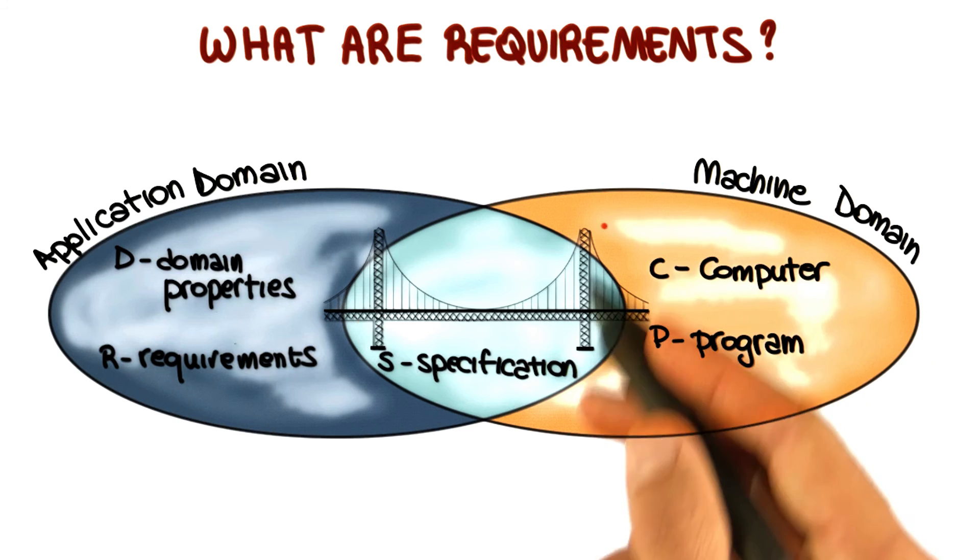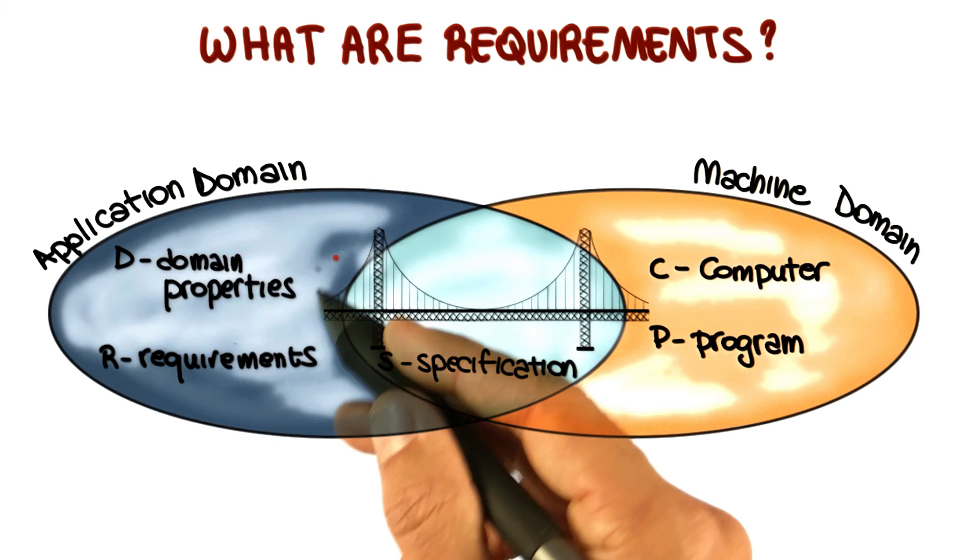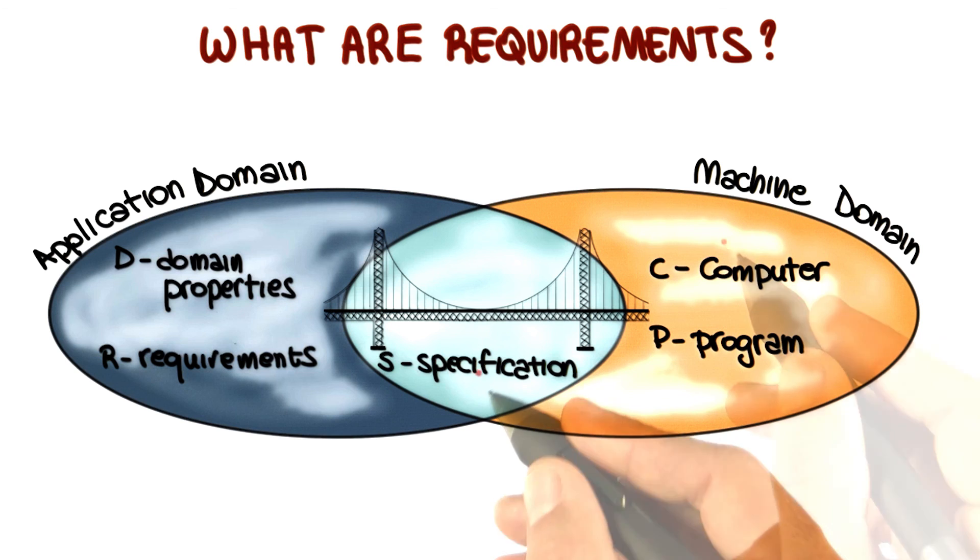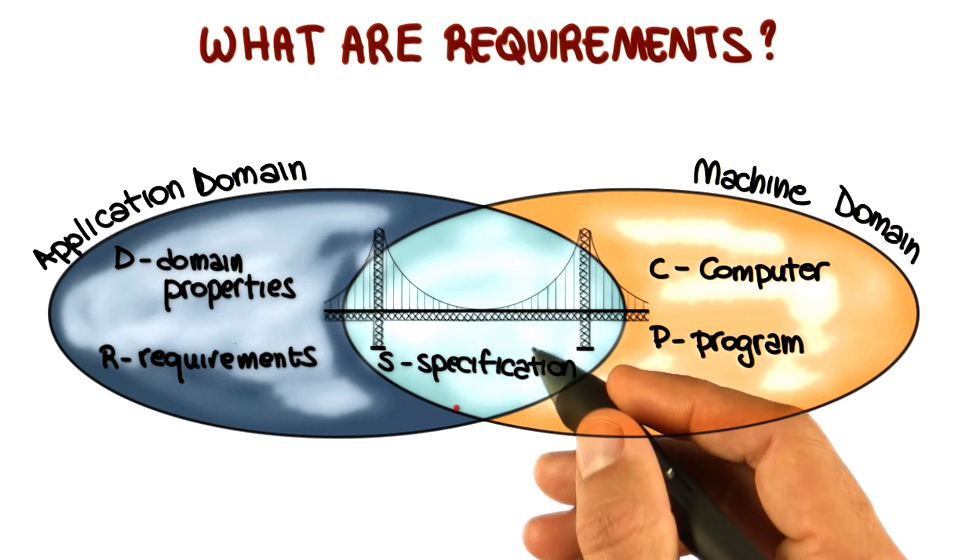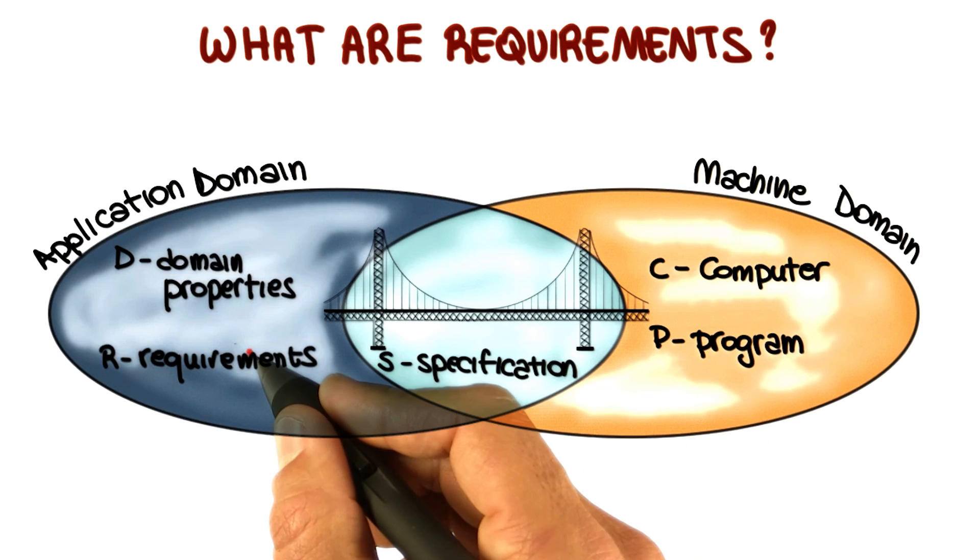Events in the real world that the machine can sense, and actions in the real world that the machine can cause. So this is what the specification is about: a bridge between these two worlds that define what the systems should do to satisfy the requirements.